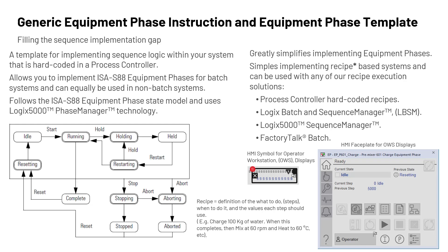It's important to note that when we say recipe, what we mean is a definition of what to do — the steps — when to do it, and the values each step should use. For example: charge 100 kilograms of water; when this completes, then mix at 60 RPM and heat to 60 degrees at the same time.